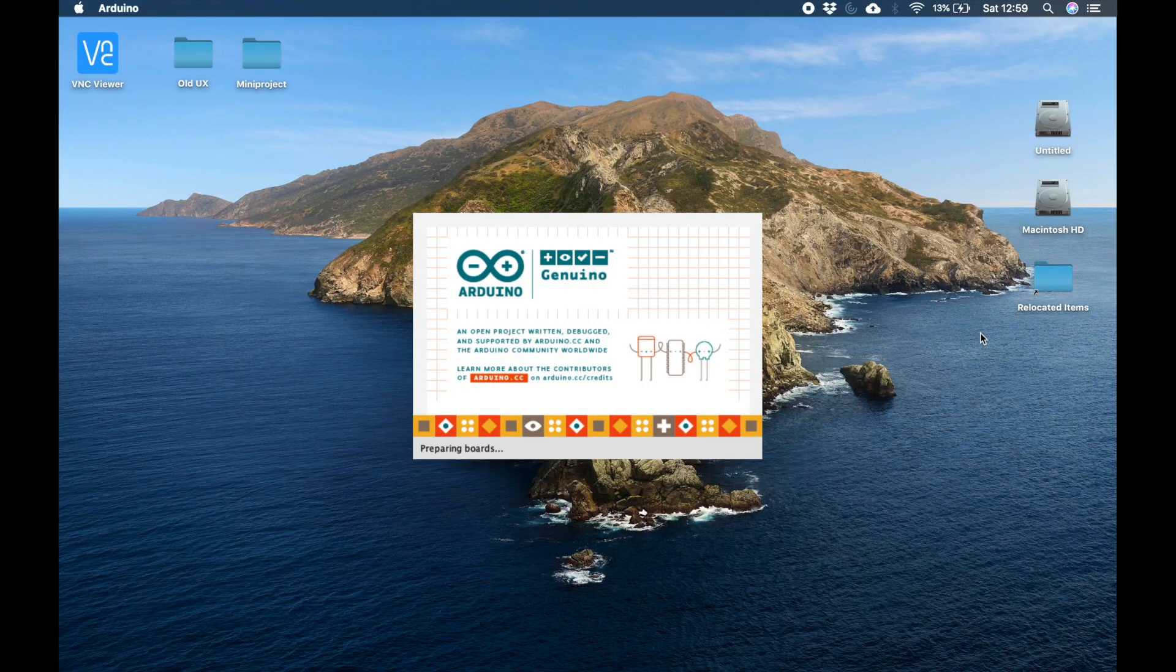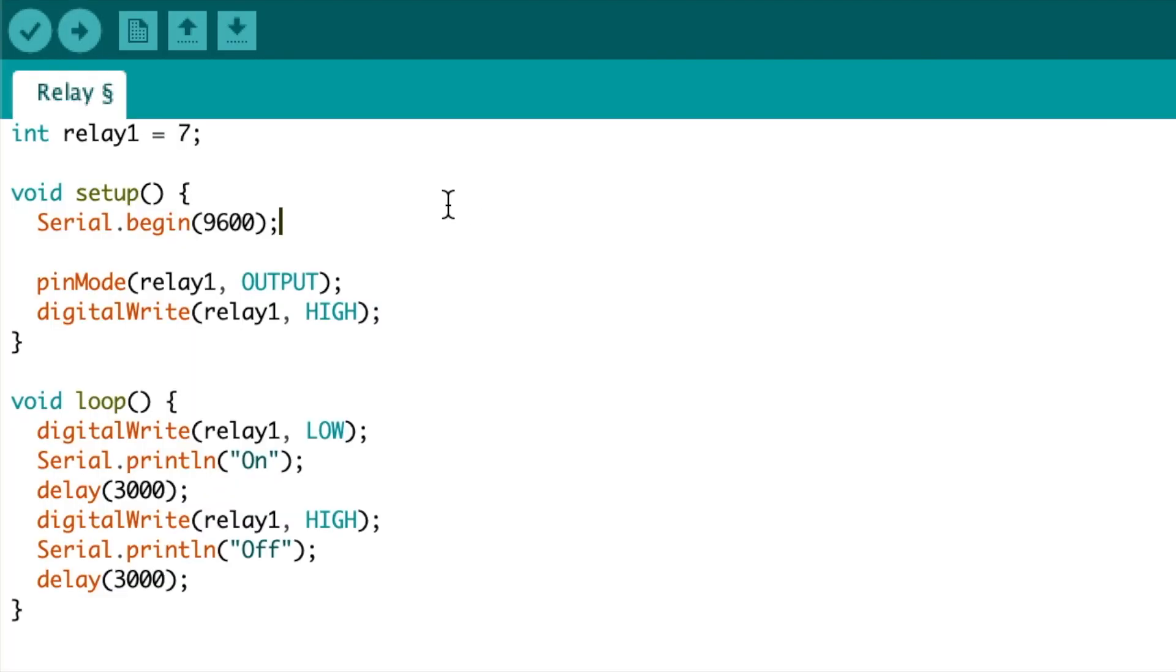It's a relatively basic script this. First, we initialize relay1 to be equal to 7, so that's pin 7. Then in the setup loop, the serial communications is defined at a baud rate of 9600. We set the relay1 pin as an output, and we set it high.